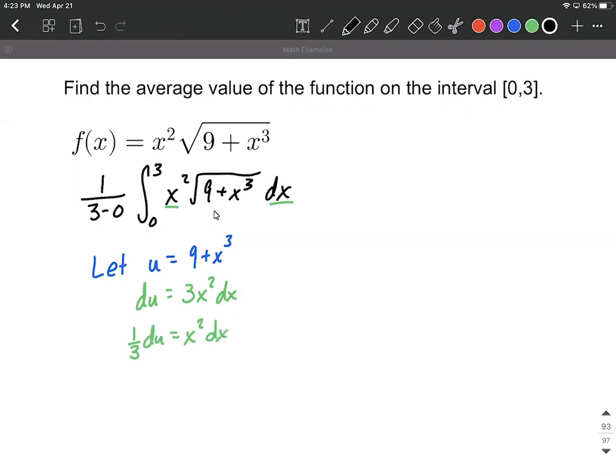And then rewriting this, we can simplify down the 3 minus 0 to just 3 out in front, then we still have the integral. Now we get to replace in; we're going to substitute in and we've replaced the x squared and the dx with 1/3, which I'm going to put out in front, du. But then we also get to replace in what's underneath the radical with u.